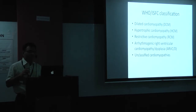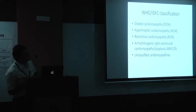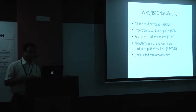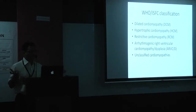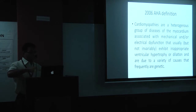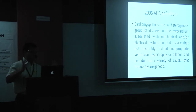The WHO classified cardiomyopathies as dilated, hypertrophic, restrictive, arrhythmogenic right ventricular cardiomyopathy, and unclassified cardiomyopathies. Then in 2006, the AHA definition came — essentially saying it's a heart muscle disease plus various associated features, and they also included ion channelopathies.